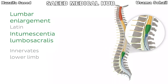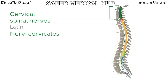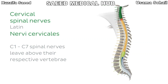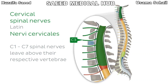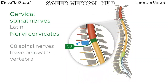Many of the structures in the body are innervated via spinal nerves, so let's take a look at them starting right at the top of the cervical level. In this area, spinal nerves C1 to C7 leave the vertebral column above their respective vertebrae. Here we can see spinal nerve C3 exiting above the third cervical vertebra. In the cervical region, we actually have eight pairs of spinal nerves, even though we've only seven cervical vertebrae. So the extra pair, C8, leaves below the C7 vertebra.